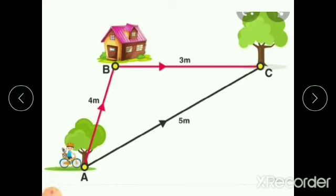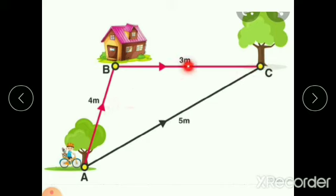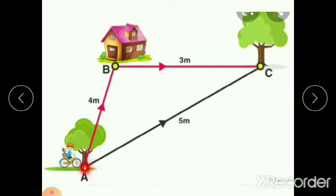As you can see in this picture, a boy goes from point A to C. He goes from A to B and then B to C. The distance he has traveled is 4 meters plus 3 meters, totaling 7 meters. The displacement is the shortest distance between the initial position A and the final position C, which is 5 meters. That is the displacement.